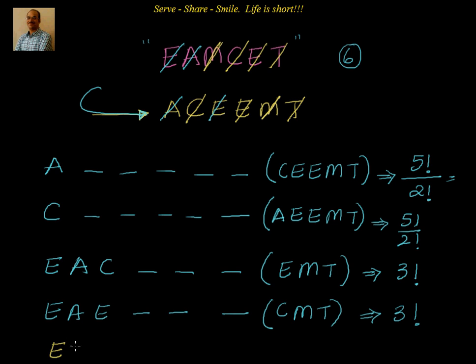So we see that they are in the alphabetical order. Now can you tell me why everything went fall place after E, A, M? Because C, E, T are in alphabetical order already.